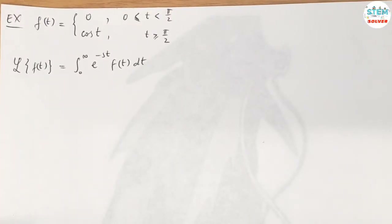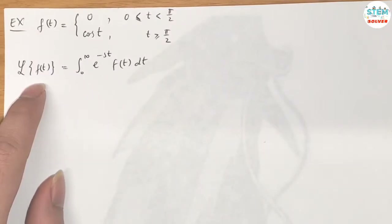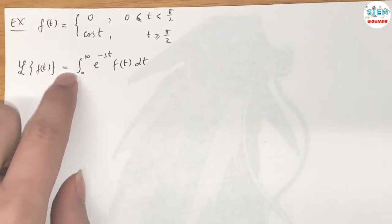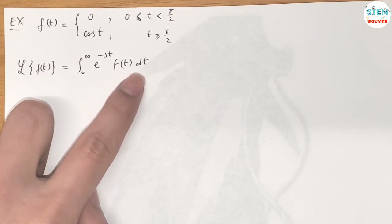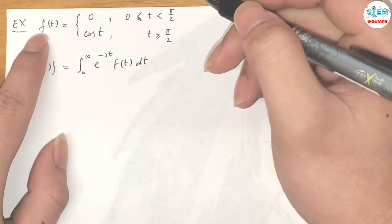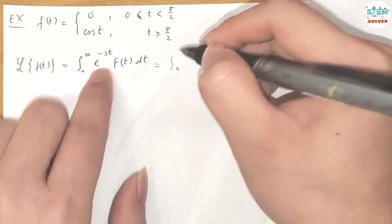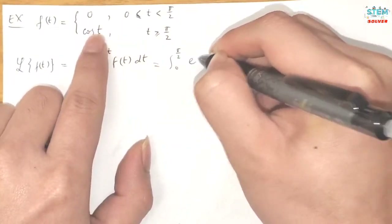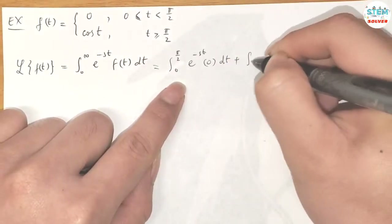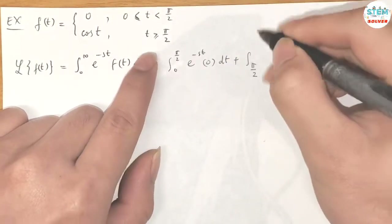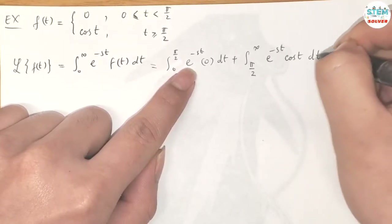Find the Laplace transform of the piecewise function f(t). By definition, the Laplace transform of f(t) is equal to the integral from 0 to infinity of e to the negative st times f(t) dt. So we replace f(t) with our piecewise definition: the integral from 0 to π/2 of e^(-st) times 0 dt, plus the integral from π/2 to infinity of e^(-st) times cos(t) dt.